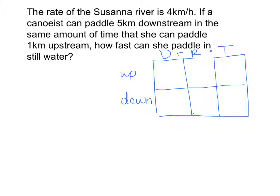So one thing that I think you may have missed — and I did kind of go over it with you quickly — but when we're dealing with wind and current problems, the R takes on a new meaning. So it's always going to be R plus or minus the wind or the current. We're going to add the wind if we're going downstream or the wind is pushing us, like a tailwind, but we're going to subtract the wind or the current from the rate of the boat if we're going upstream and against the current, because it slows us down.